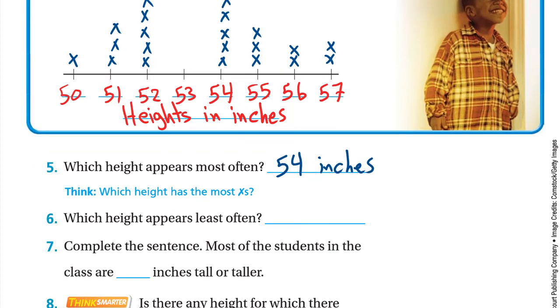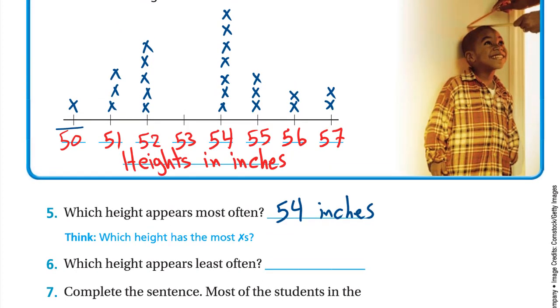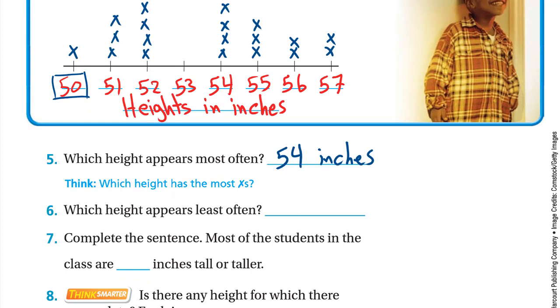Number six: Which height appears least often? At 50 we have only one X, so this is the least often height. It's 50 inches.